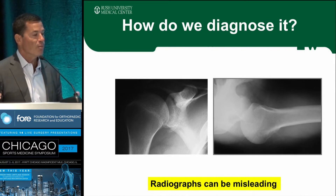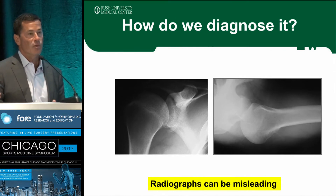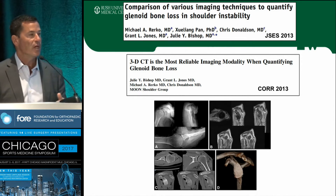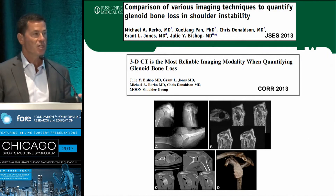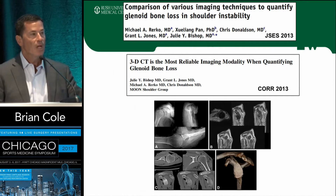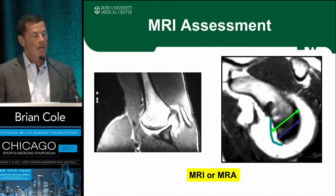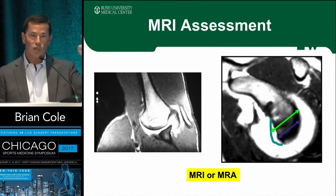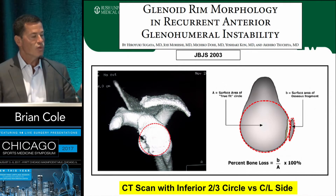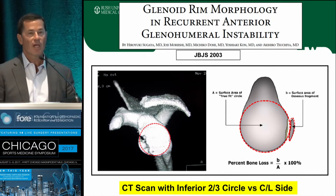X-rays can be very misleading. There are a number of views that have been described, but most of us are going on to advanced imaging. To date, CT scan is what we use most commonly. If you're a surgeon in the room, it's a 3D CT scan with thin slices with humeral subtraction, and that will basically give you a sense of what's going on in the glenoid. Then you can do your calculations based upon some parameters we've learned from MRI analysis. MRI can be used, and we basically draw a circle around the inferior two-thirds of the glenoid to quantify the bone loss.